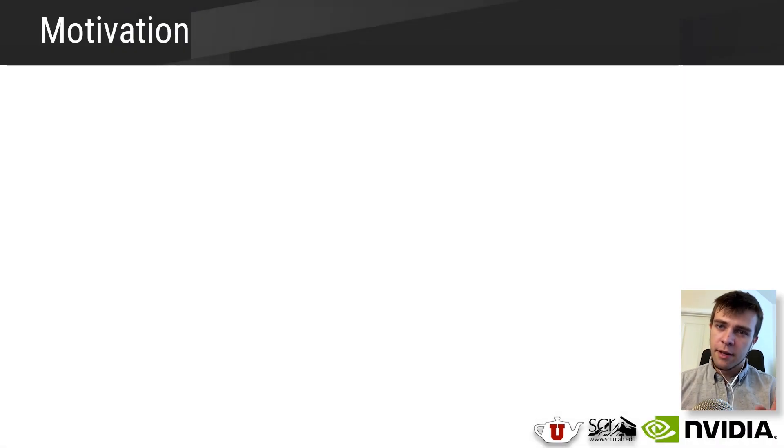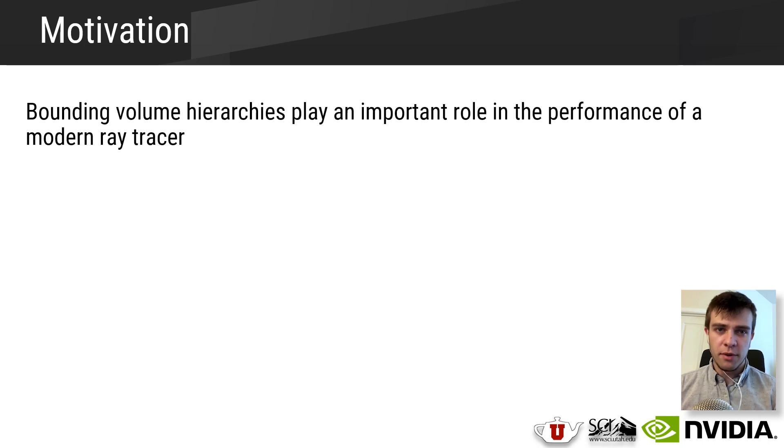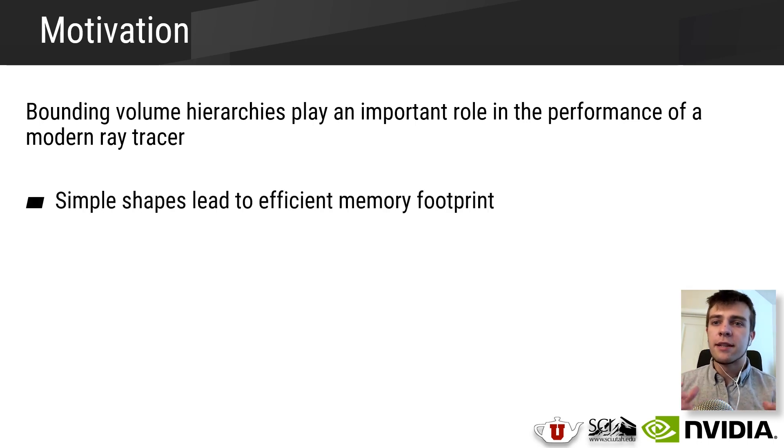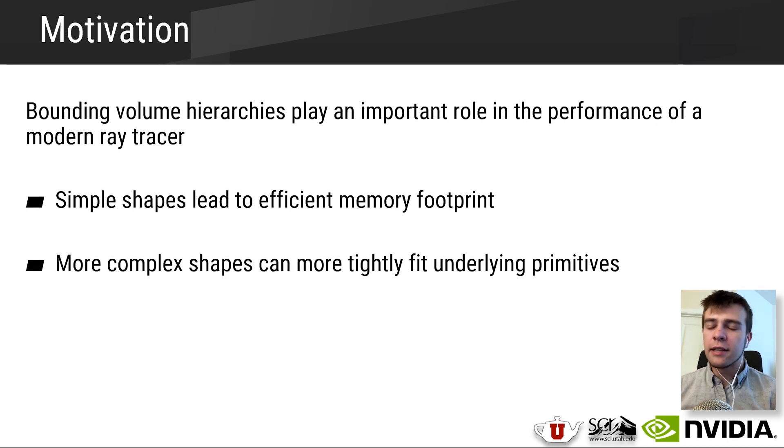As many of us know, bounding volume hierarchies play an important role in the performance of a modern ray tracer, and depending on the design decisions that you choose, that can have a really significant impact on traversal performance. In general, there's a trade-off when it comes to BVH design, where simple shapes lead to an efficient memory footprint, whereas more complex shapes can more tightly fit the underlying primitives and can achieve better culling.